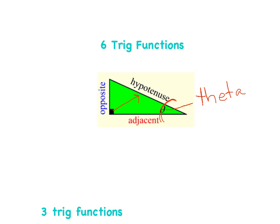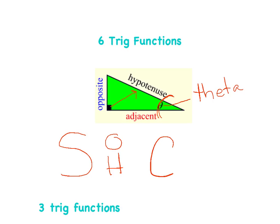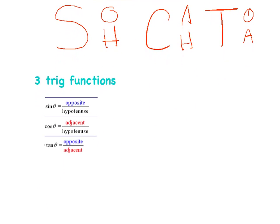The acronym to help us remember sine, cosine, and tangent is SOH-CAH-TOA. SOH: sine equals opposite over hypotenuse. CAH: cosine equals adjacent over hypotenuse. TOA: tangent equals opposite over adjacent.